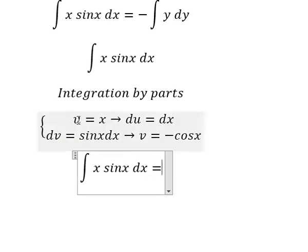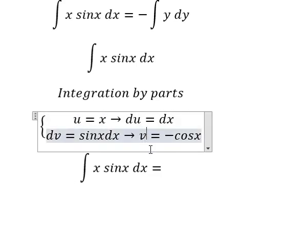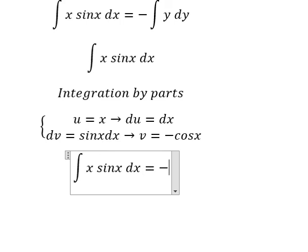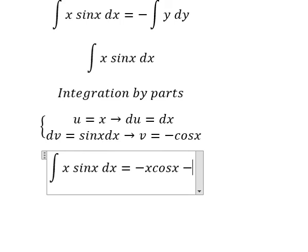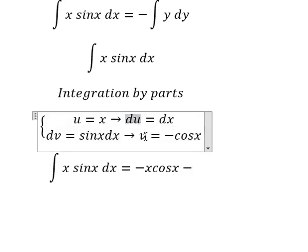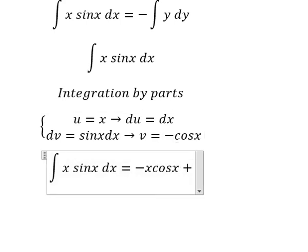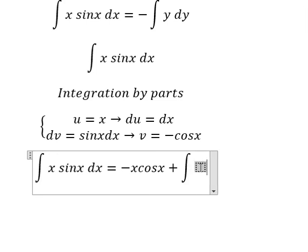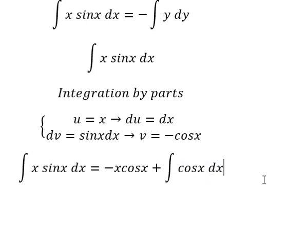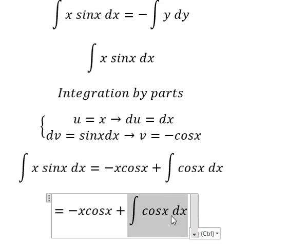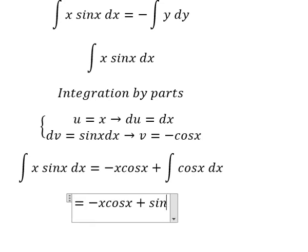So we have u multiplied by v, minus du multiplied by v. Since we have negative times negative, we have positive. And we have the integration cosine x dx. The integration of this one, we have sine x, and I will put the constant C.